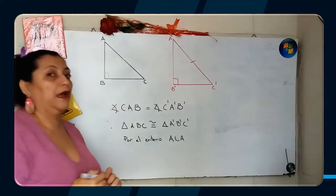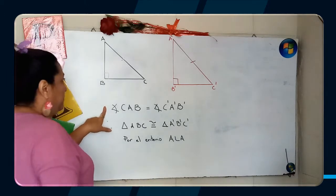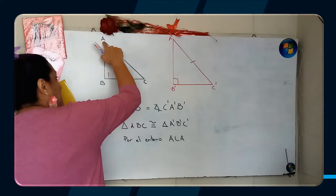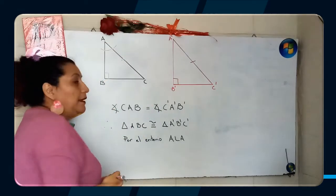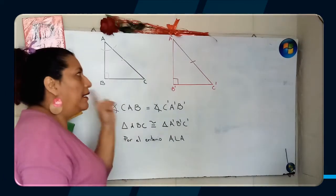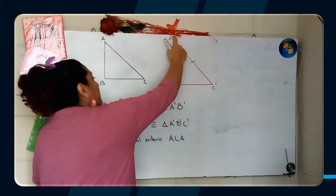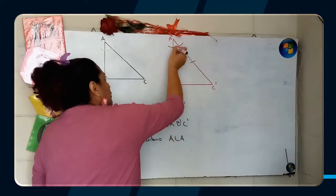Y ahora comienzo el análisis. El ángulo que está formando CAB es igual al ángulo que se está formando en C'A'B'. Estos son iguales.